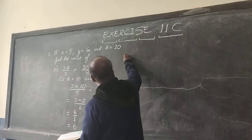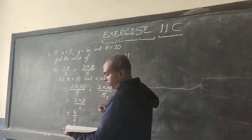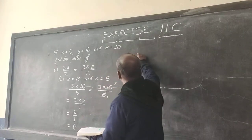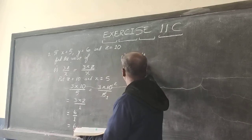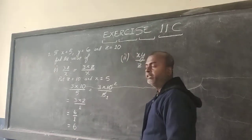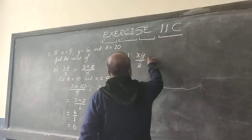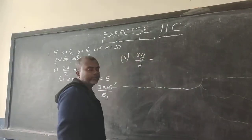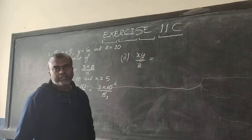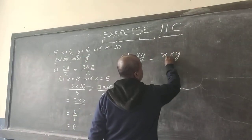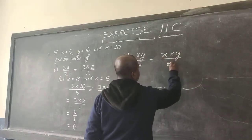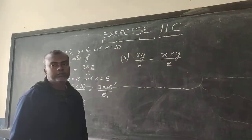Then we have another one. Part 2. In this we have XY divided by Z. So again no multiplication, I mean there is no sign between X and Y. So we will have to write X into Y. No sign means multiplication sign is there.